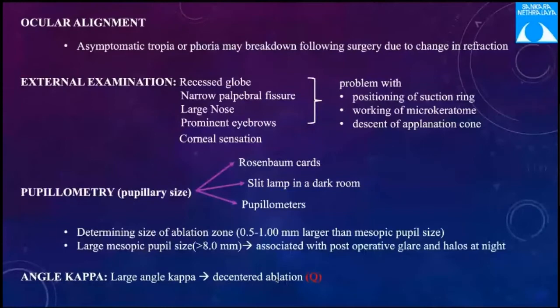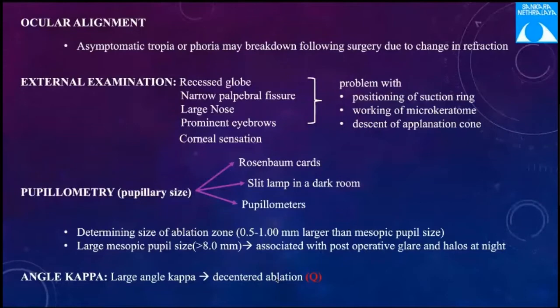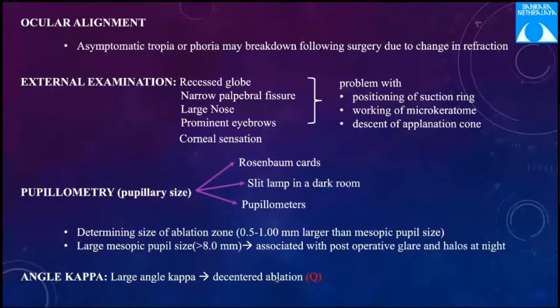The usual ablation area is 6 to 6.5 mm. If the mesopic pupil size is above 6 mm, there is a risk of night glare and transition zone issues. A larger ablation optical zone cannot simply be done because it requires burning more corneal tissue — the larger the area, the more ablation and the thinner the cornea. There is therefore a limitation between the pachymetry and the mesopic pupillary diameter.